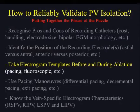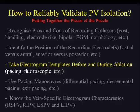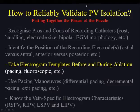The third important point to validate PV isolation is to take electrogram templates before and during the ablation — not after. It is important to know where the electrogram templates were taken, to have a fluoroscopic memory, and to repeat these template recordings during every pacing maneuver.